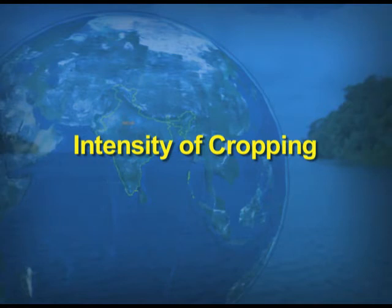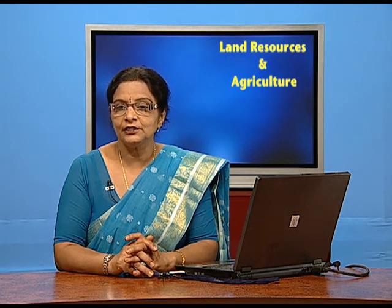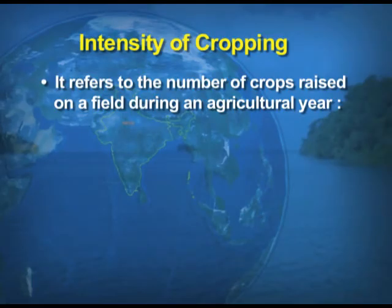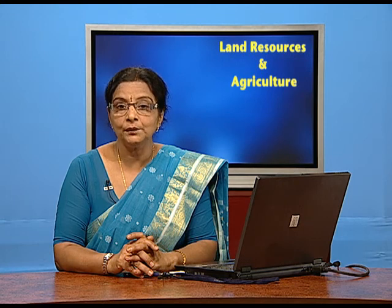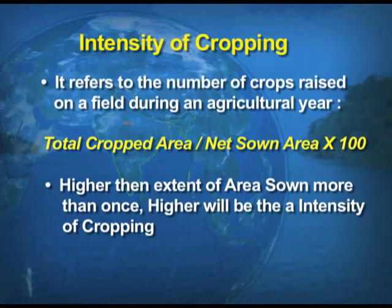The last part for this section of the chapter is the intensity of cropping, which is very important because we have a shortage of land and we have to improve the intensity of cropping. It refers to the number of crops raised on a field during an agricultural year. The formula is: total cropped area divided by net sown area, multiplied by 100. This is how we calculate the intensity of cropping.